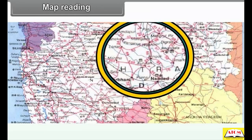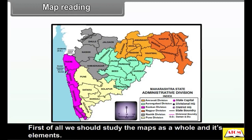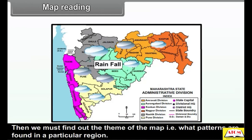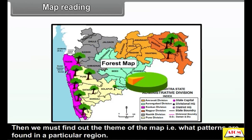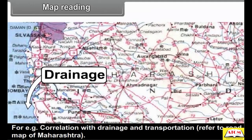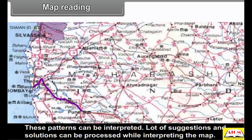A map has a lot of information loaded in it. We have to read this information carefully. First of all, we should study the map as a whole and its elements. Then we must find out the theme of the map, i.e. what patterns are found in a particular region. For example, correlation with drainage and transportation. Refer to the road map of Maharashtra. These patterns can be interpreted, and a lot of suggestions and solutions can be processed by interpreting the map.